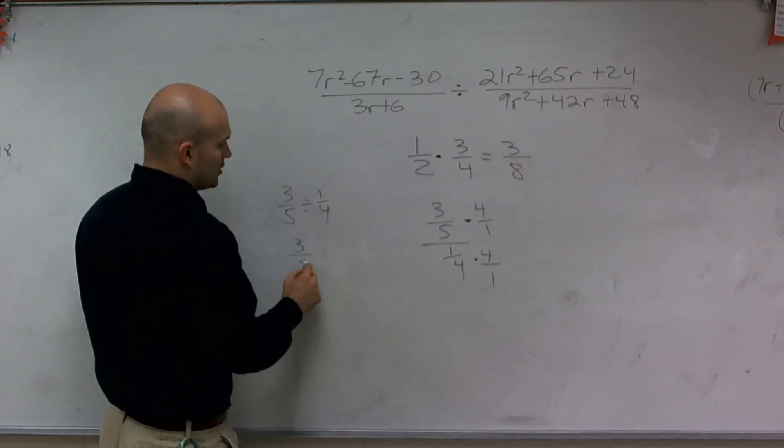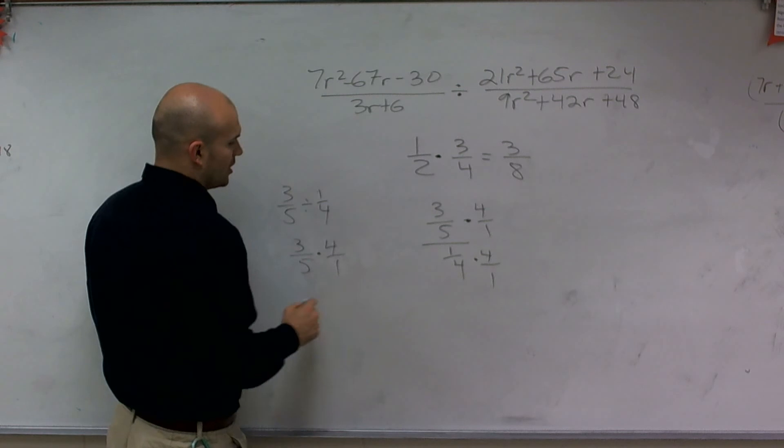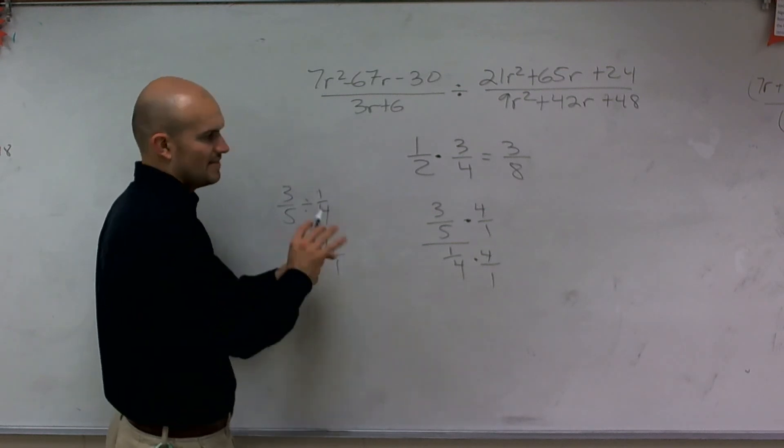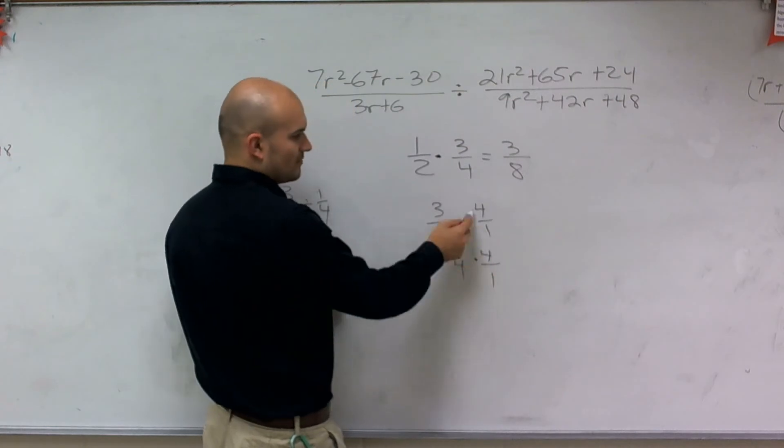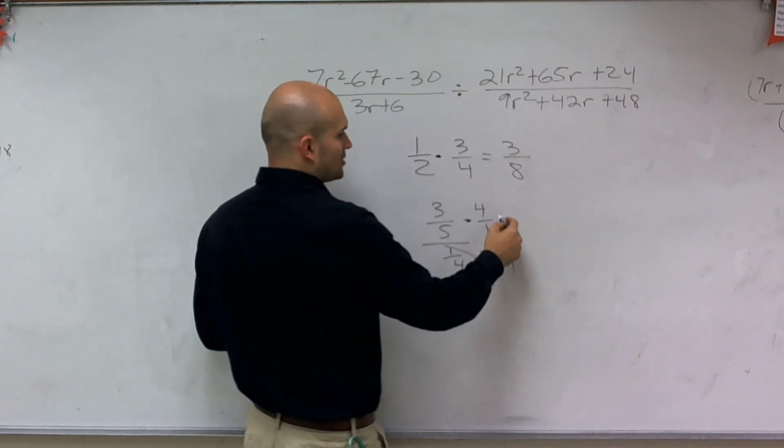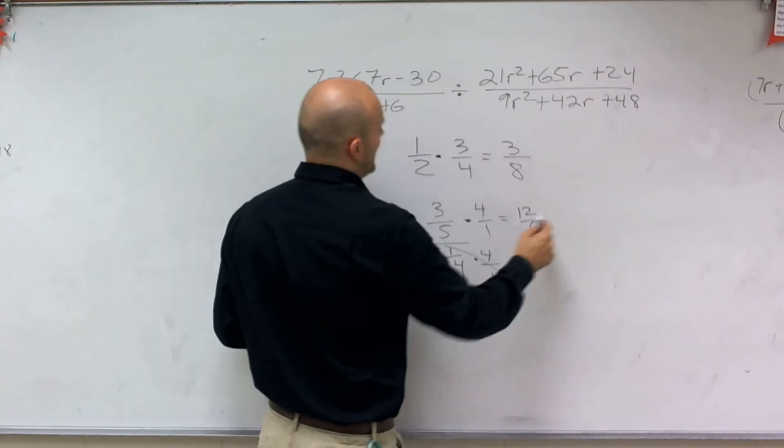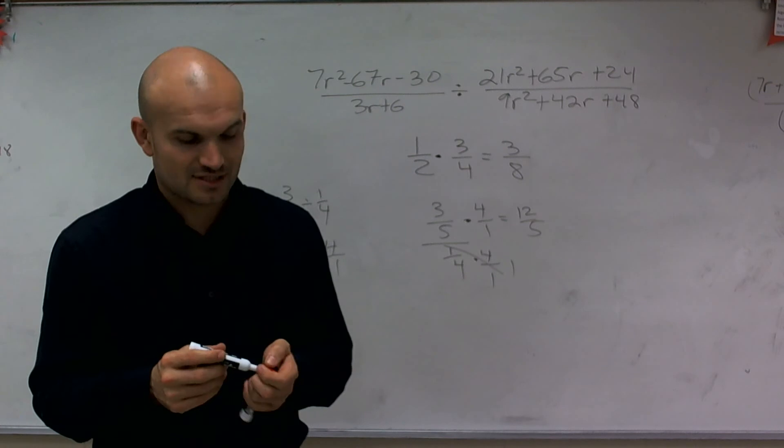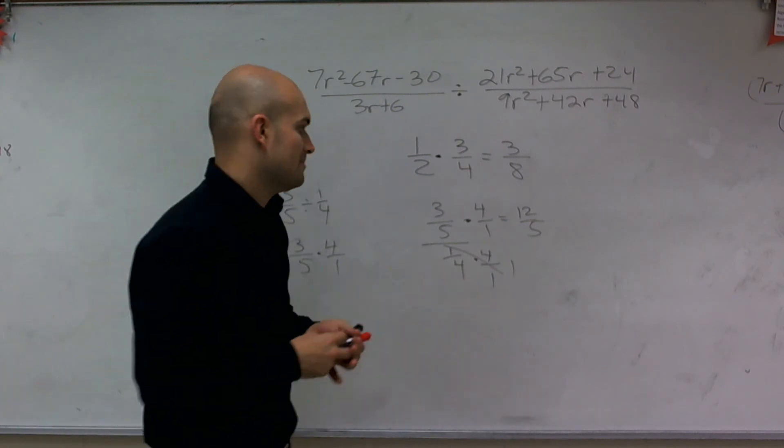So in the same way I could write 3 divided by 5 divided by 1 fourth, what we do is flip our divisor or change it to the reciprocal of our divisor and then multiply across. Because when you multiply your denominator on top and bottom, that goes to 1 and you multiply across, so you get 12 over 5. So when you're dividing fractions, you can reciprocate them and then multiply across.